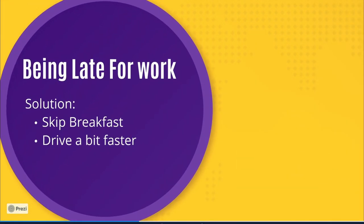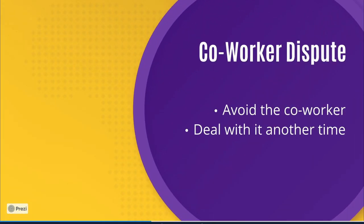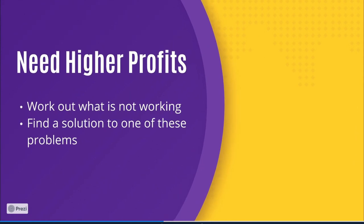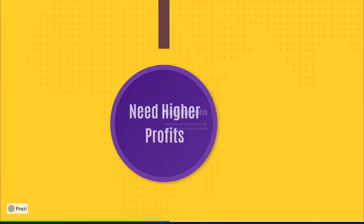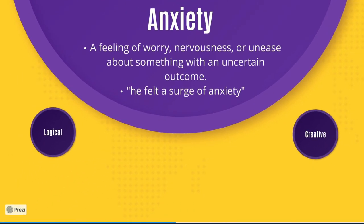A logical mind may see three separate problems in their life: being late for work, which can be solved by skipping breakfast and driving a bit faster; not getting on with a coworker, which can be solved by avoiding the coworker until a better time; and struggling to meet a profits target, which can be solved by looking at different ways to push profits. This logically makes sense as there's three problems and three solutions, but it isn't that simple for these more connected minds.